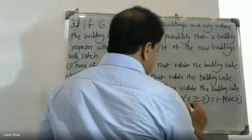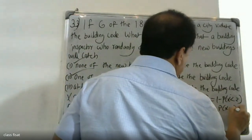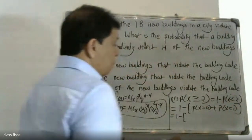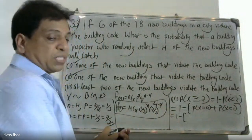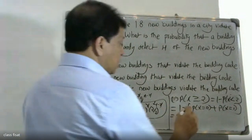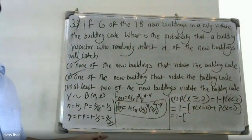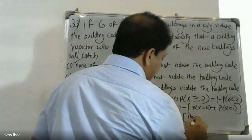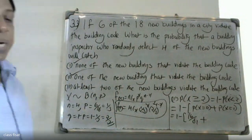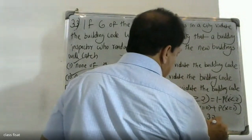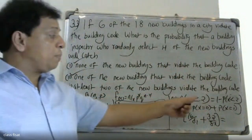This equals 1 minus the probability of x equals 0 plus the probability of x equals 1. Substituting our previously calculated values: 1 minus (16/81 plus 32/81), which gives us 1 minus 48/81.